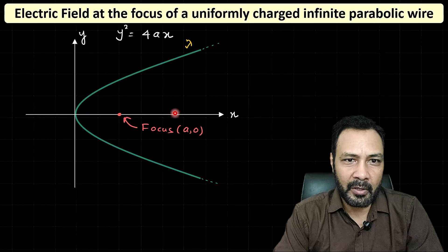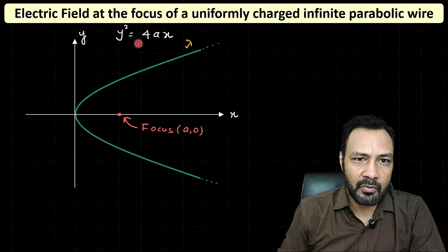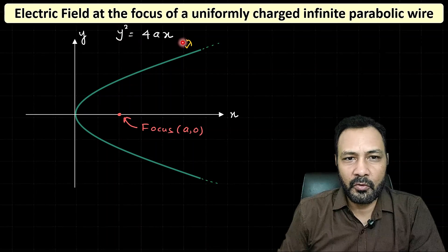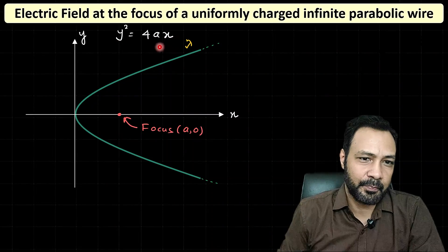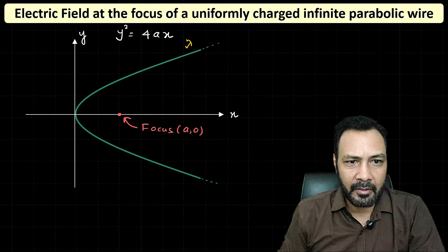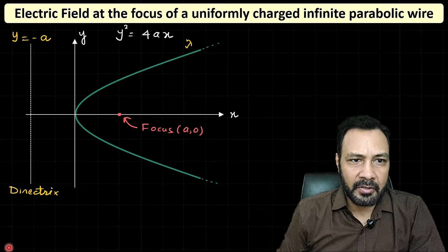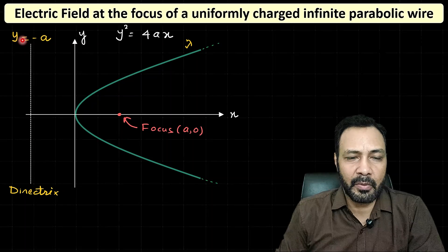To proceed, I want to find the polar form of the equation of the parabola. This is the Cartesian form: y² = 4ax. Before deriving the polar form, we need to recall what the directrix of the parabola is.